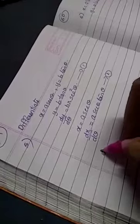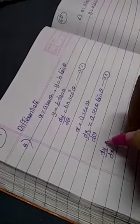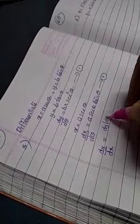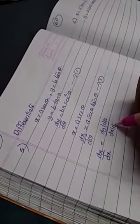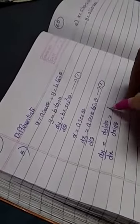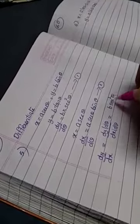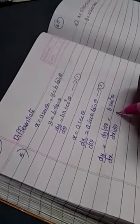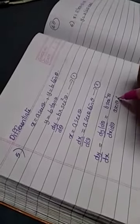Again, what we have to do? Find dy/dx. What is the formula to find dy/dx? dy/dx is dy/dθ divided by dx/dθ. And what is dy/dθ? b sec² θ divided by what is dx/dθ? a sec θ tan θ.